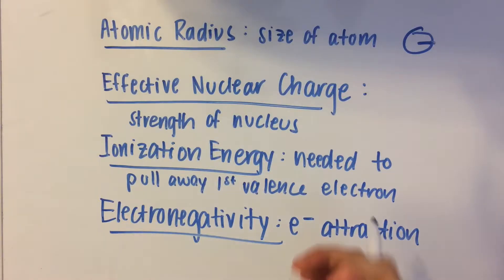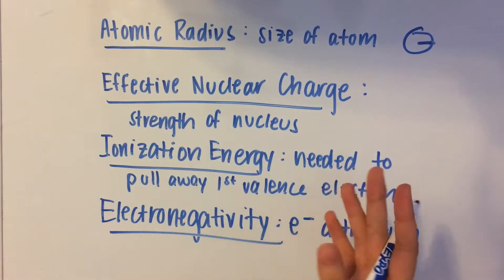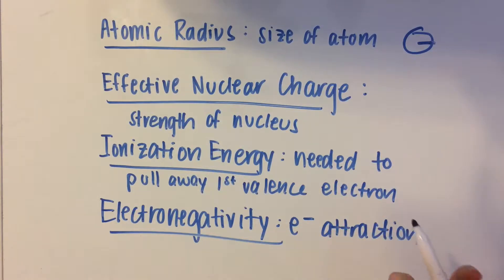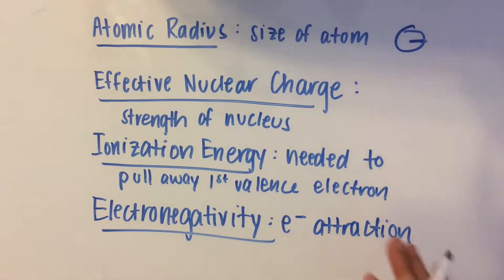Effective nuclear charge really talks about how positive the nucleus is or the strength of it, because the more positive the nucleus is, the more it's going to attract electrons.